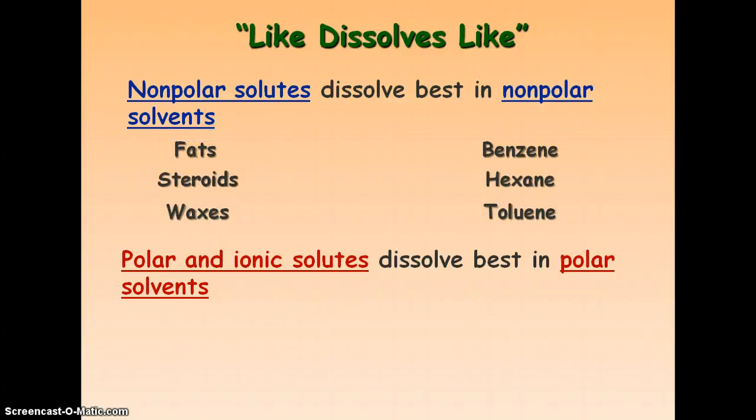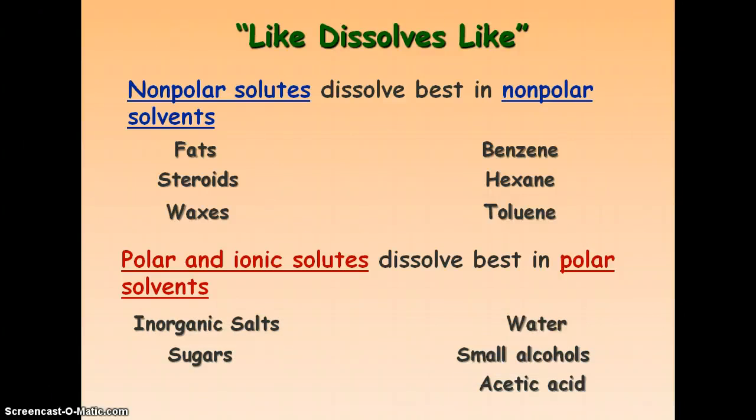Here are some examples of nonpolar solutes and solvents. Nonpolar solutes: fats, steroids, and waxes. Nonpolar solvents: benzene, hexane, toluene. And these we're probably more familiar with are polar and ionic stuff. Polar and ionic solutes are going to be inorganic salts, any ionic solution, and sugars. And then polar solvents are going to be your water, your small alcohols, and acetic acid, which is really just vinegar.